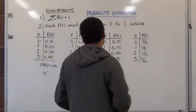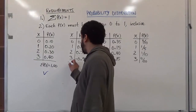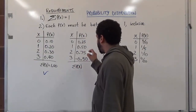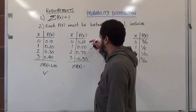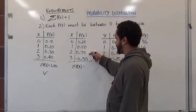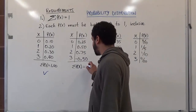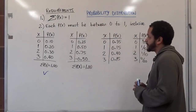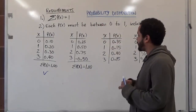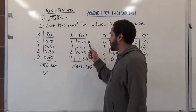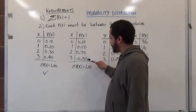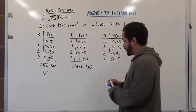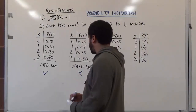Let's check the second one. The sum of P(x) is 0.25 plus 0.50 plus 0.75 plus negative 0.5, which gives a grand sum of 1.0 — that passes the first requirement. However, the second requirement states every value must be between 0 and 1. The value negative 0.5 is less than 0, so this distribution is no good.